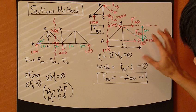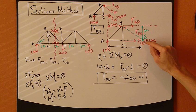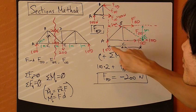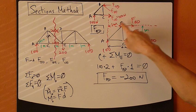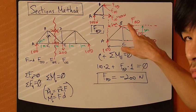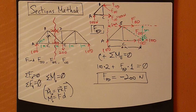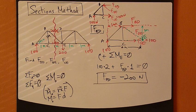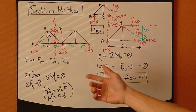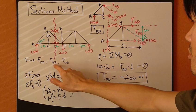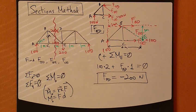So the trick here is to pick a joint outside of your free body diagram. The last force to be found is FBE — let's look at that next.